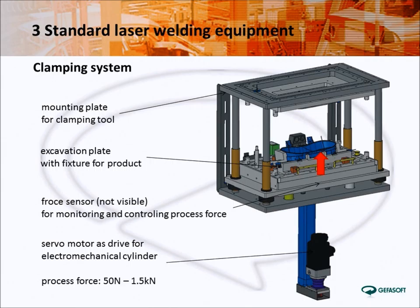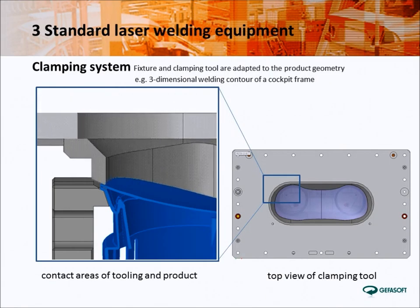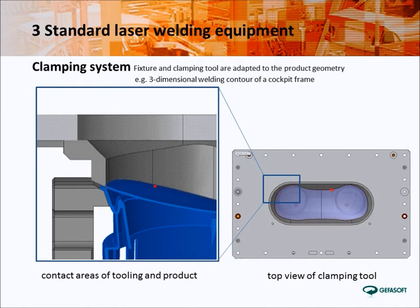Besides the laser system, the clamping system takes an important role for the process. In our machines, we use a self-developed servo-motor driven press, which features force positioning as well as precise force control and meltdown measurement directly at the product. The product-specific, often very complex, fixture and welding masks provide a homogeneous force introduction. The animation shows the tooling for a product with a 3D landscape on the example of a cockpit frame. The force is introduced directly at the welding area and taken up directly underneath, which prevents bending or stressing the product.